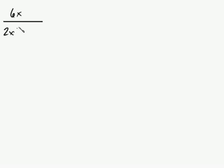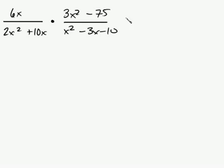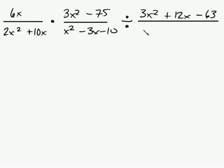Okay, so kind of treat this like a test. Actually try to do it. Plus 10x, this is multiplied times 3x squared minus 75, and that is over x squared minus 3x minus 10, and that's divided by 3x squared plus 12x minus 63, and that is over x squared plus 9x plus 14.